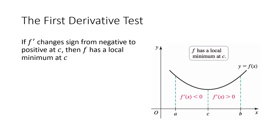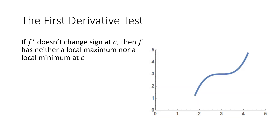Instead, if my slope changes from negative, then it's zero at the critical point, and then the slope is positive, my function was going down and then it started going back up — that's going to be a local minimum. And if the slope doesn't change sign, then f has neither a local max nor a local min.